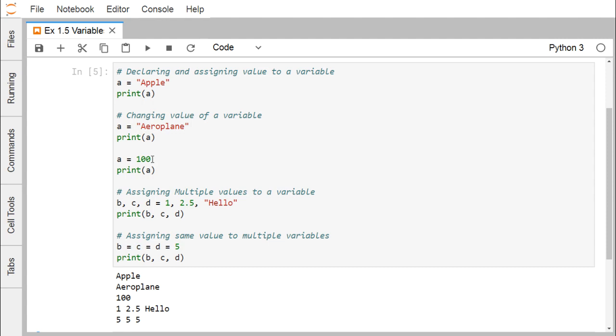During runtime, whatever value the variable is containing will decide the data type of the variable. In Python there is no need to declare the variable separately at the beginning of the code.